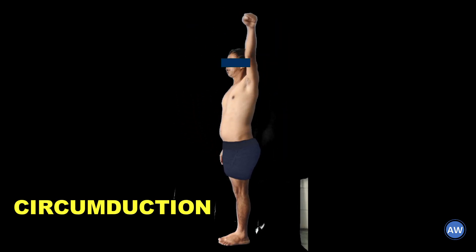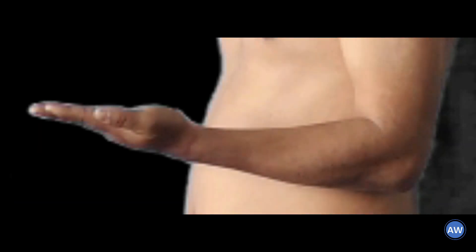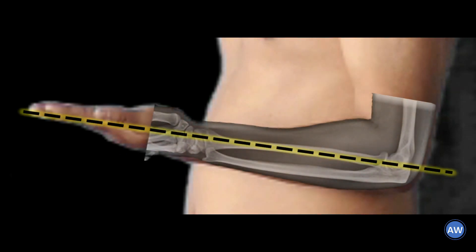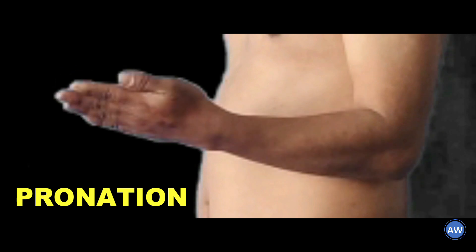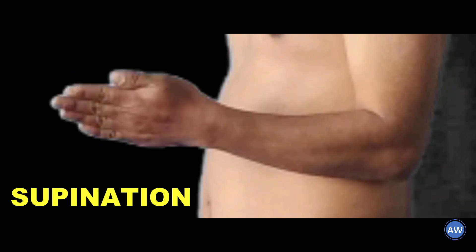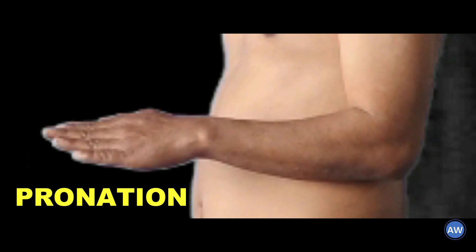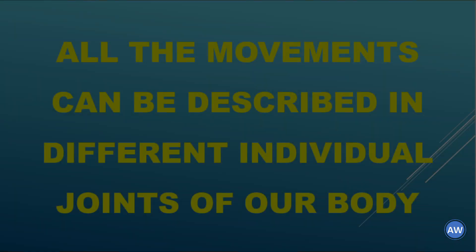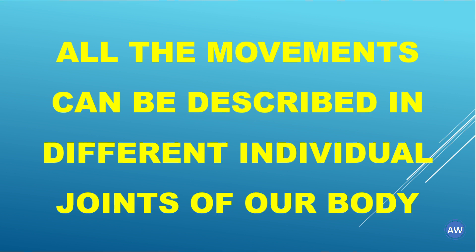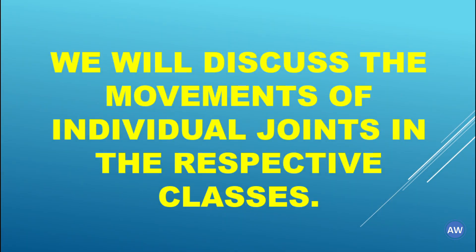For the shoulder joint, the medial and lateral rotation can be done like this. The full range of movement possible in the shoulder joint is called circumduction. A forearm further permits some special rotatory movements, the axis for which passes parallel to the bones inside it. The movement where the palm faces downwards is called pronation, and the movement opposite to it is called supination. All the movements can be described in different individual joints of our body.